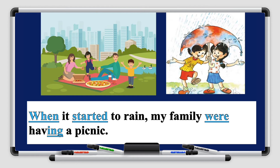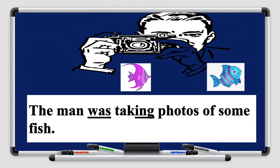Another example: 'My family were having a picnic. It started to rain.' The long action is 'having a picnic'; the short action is 'it started to rain.' Using past continuous: 'was/were' with verb plus -ing. The merged sentence: 'When it started to rain, my family were having a picnic.' Now focus on the position of 'when' — it's at the beginning of the sentence, so we use a comma to separate the two clauses: 'When it started to rain, my family were having a picnic.' When 'when' is in the middle of the sentence, we don't use the comma.